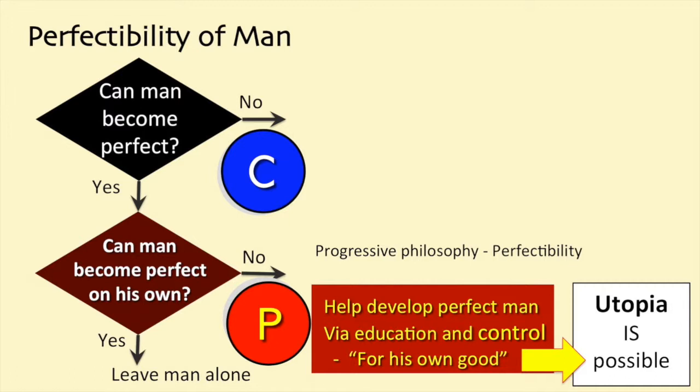If we answer no, then we arrive at the progressive philosophy, which has a goal of guiding mankind to perfection via education and social control for his own good. With the right type of education and control, a new man ready to create utopia is possible. Progressives believed so passionately in utopia that even when faced with a century's worth of failed socialist experiments that did quite the opposite of create a utopia, progressives rationalized that the failures were due to flawed leadership and not to flawed ambitions and objectives.